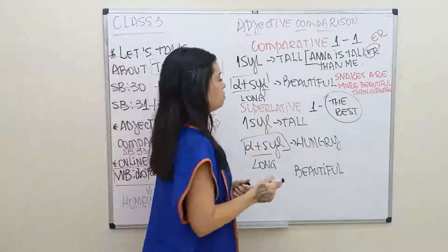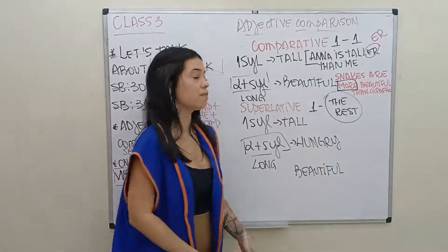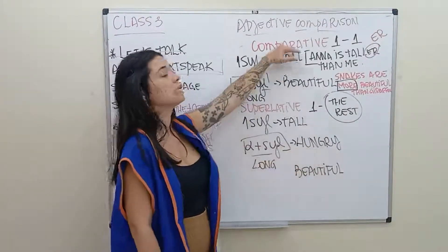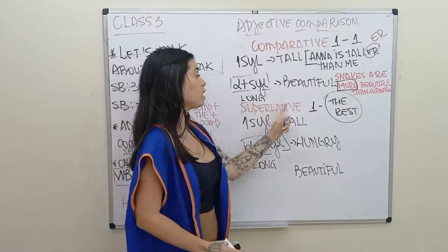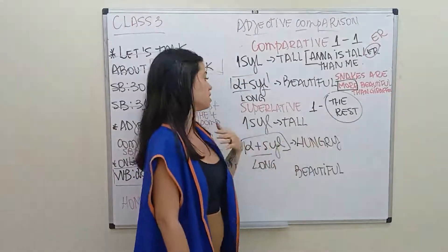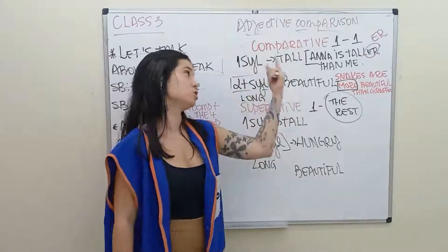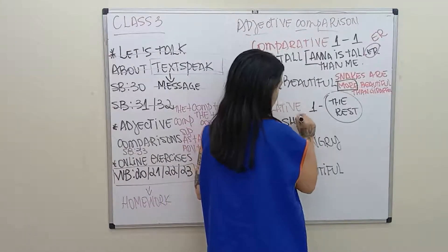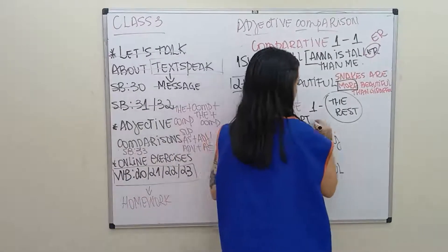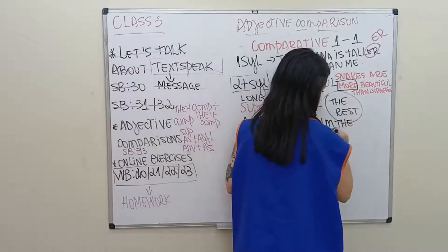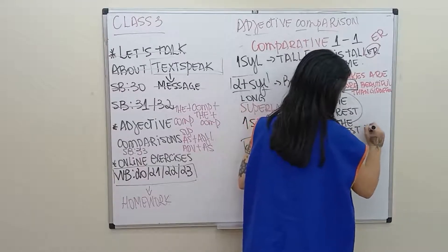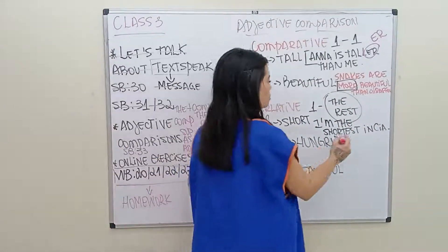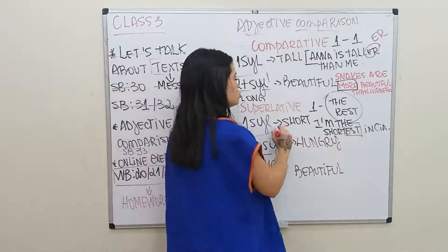You see what happens to beautiful — 'more' goes before. And that's what happens to long adjectives. Now let's pay attention to the superlative. When I compare one person to the rest, I can say I am the shortest — which is the opposite of tall. So I am the shortest in SIA. I am comparing myself to the rest of the teachers and employees. So I have to use -est. It happens to short, it happens to tall. Tall becomes tallest.